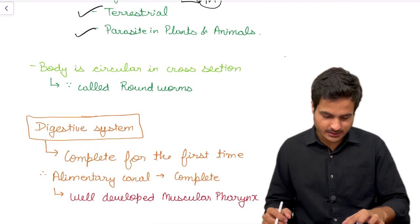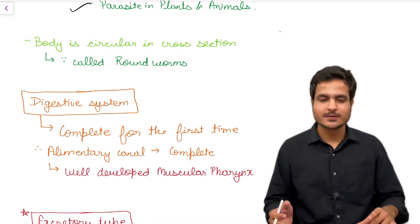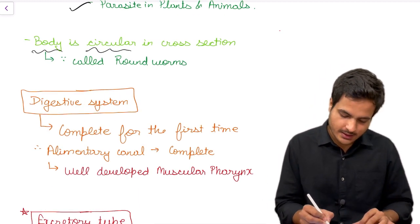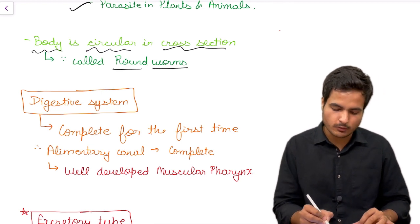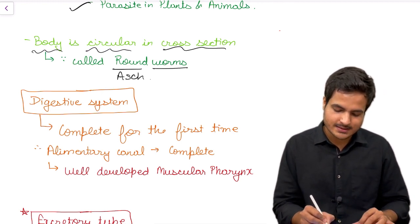Now let's move towards the nomenclature, how this name was derived. As the body is circular in cross section, they are called roundworms, that means Aschelminthes.